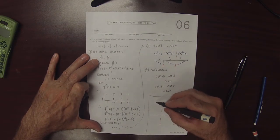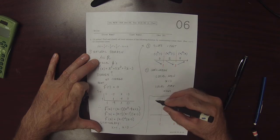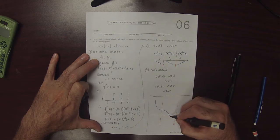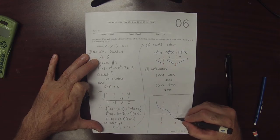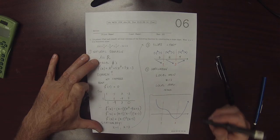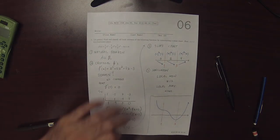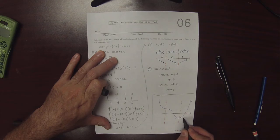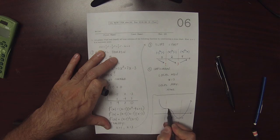So it slopes down to 1, gets flat, and then continues to slope down, and then comes to a minimum at 3, and then goes up. So there's a stationary point here with a horizontal tangent, and another stationary point here with a horizontal tangent.